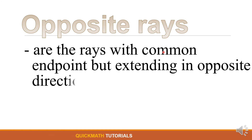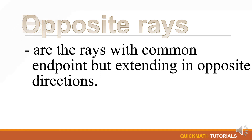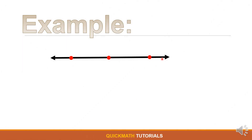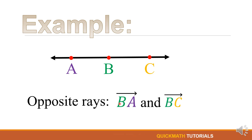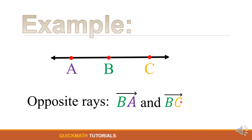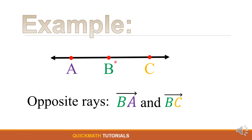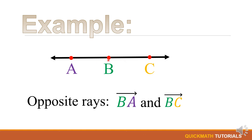Now we have opposite rays. Opposite rays are rays with a common endpoint but extending in opposite directions. For example, we have a line with three points A, C, and B. The opposite rays are ray BA — where B is the endpoint — and ray BC — where B is also the endpoint. These two rays are opposite rays because they have the same common endpoint, point B, but they extend in opposite directions.